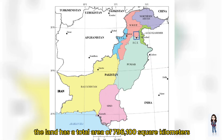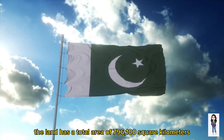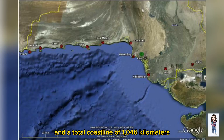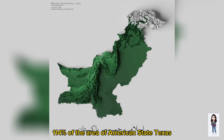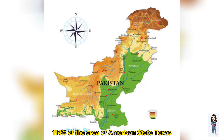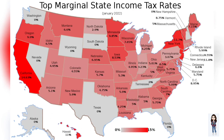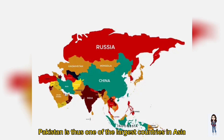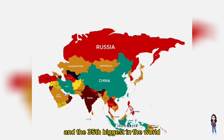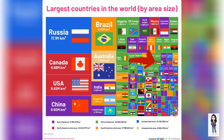The land has a total area of 796,100 square kilometers and a total coastline of 1,046 kilometers. This land area is approximately 114% of the area of the American state of Texas. Pakistan is thus one of the largest countries in Asia and the 35th biggest in the world.